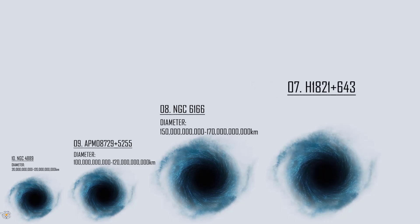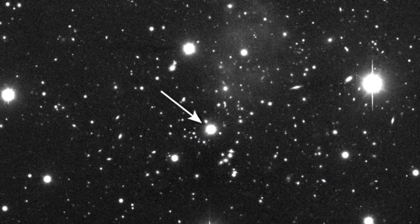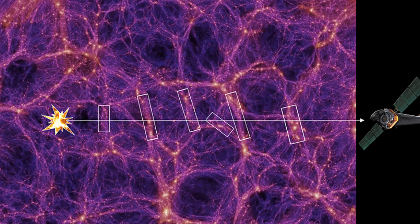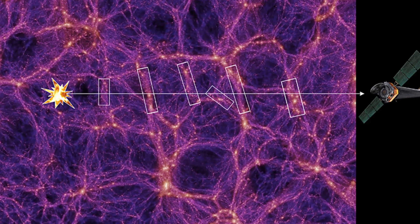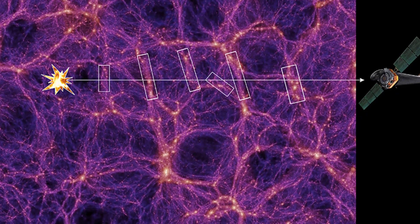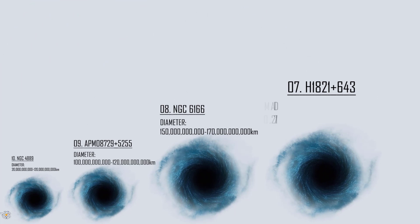Number 7: H1821+643. H1821+643 is a quasar in the constellation of Draco. Astronomers in 2014 identified it as the most massive black hole with a precise measured mass at 30 billion solar masses. Several other black holes are possibly more massive but they have less accurate mass estimates. Its diameter is around 172 billion kilometers or 17.2 times Pluto's orbit.